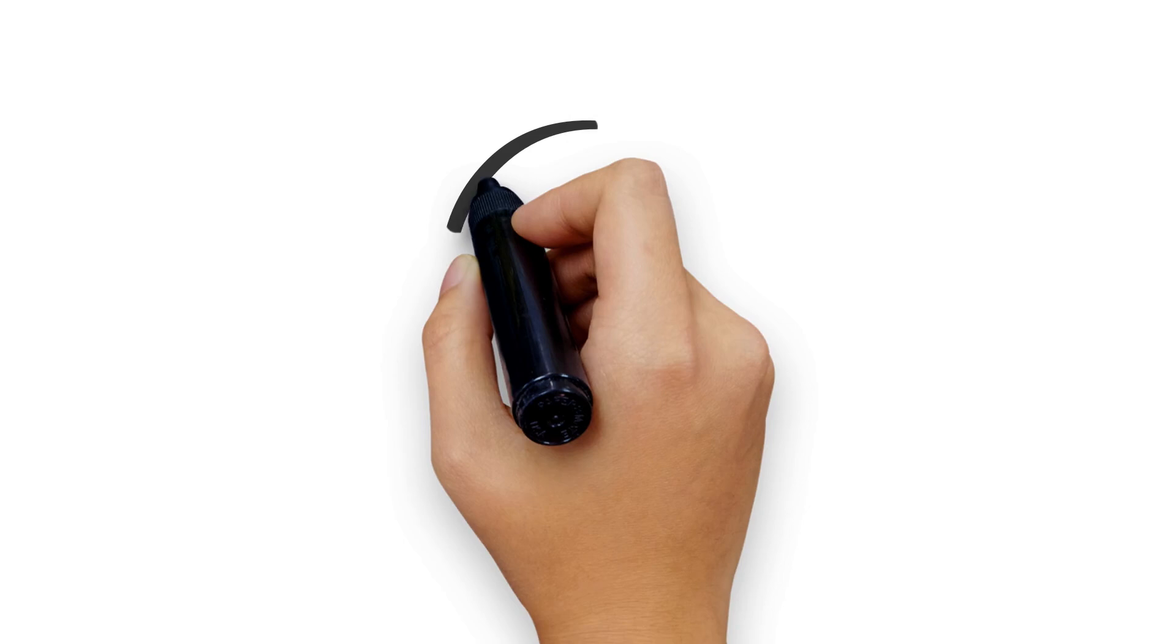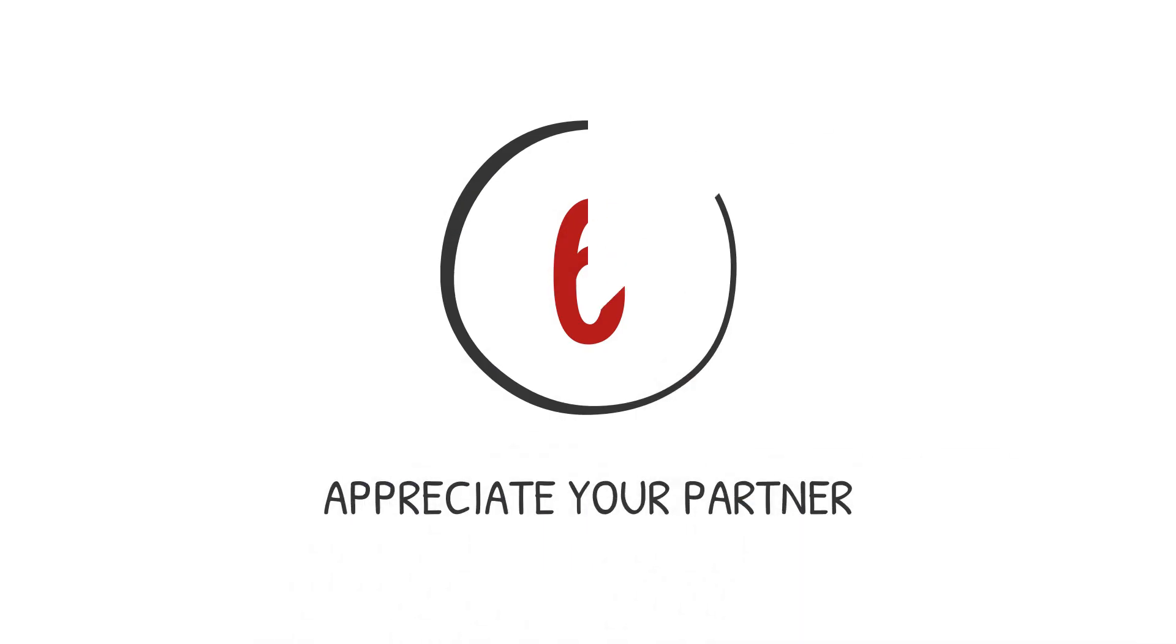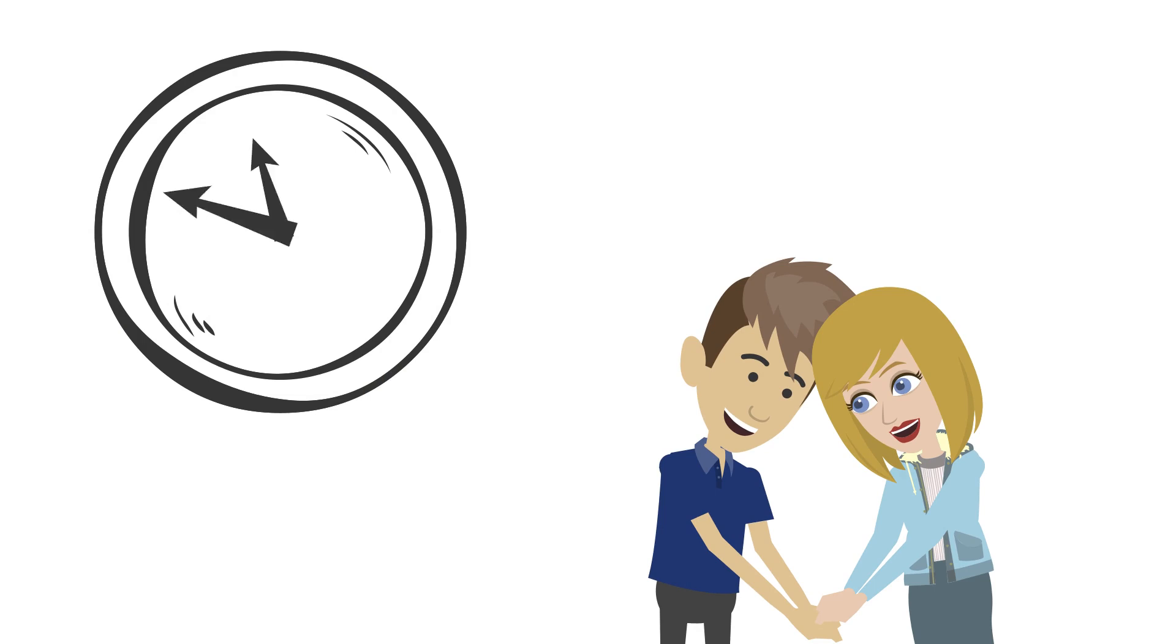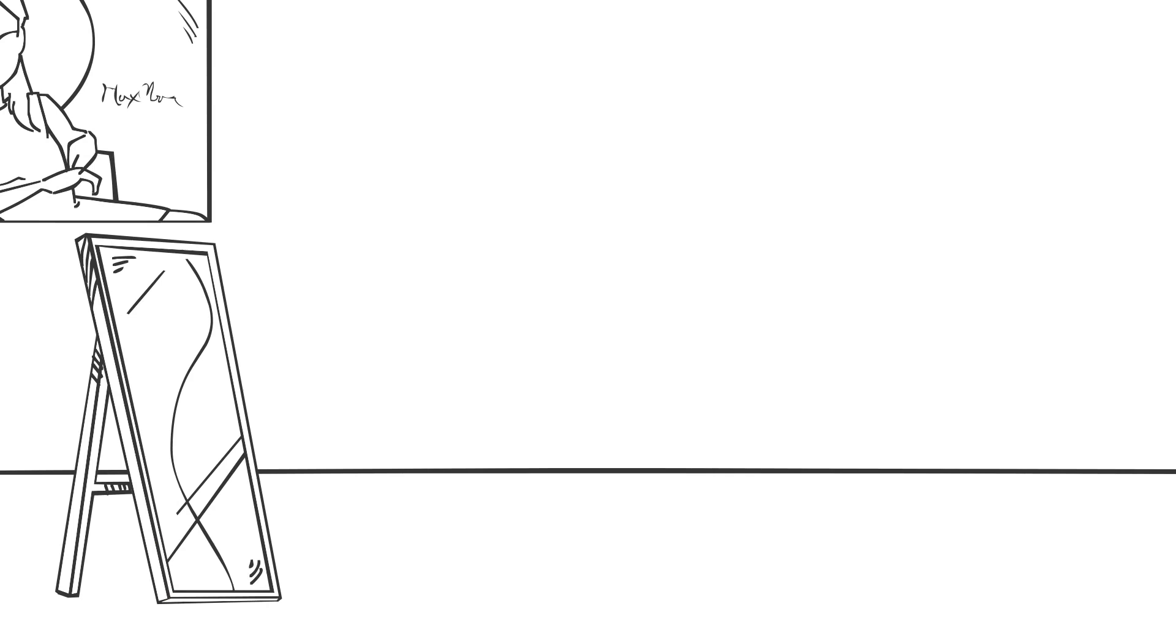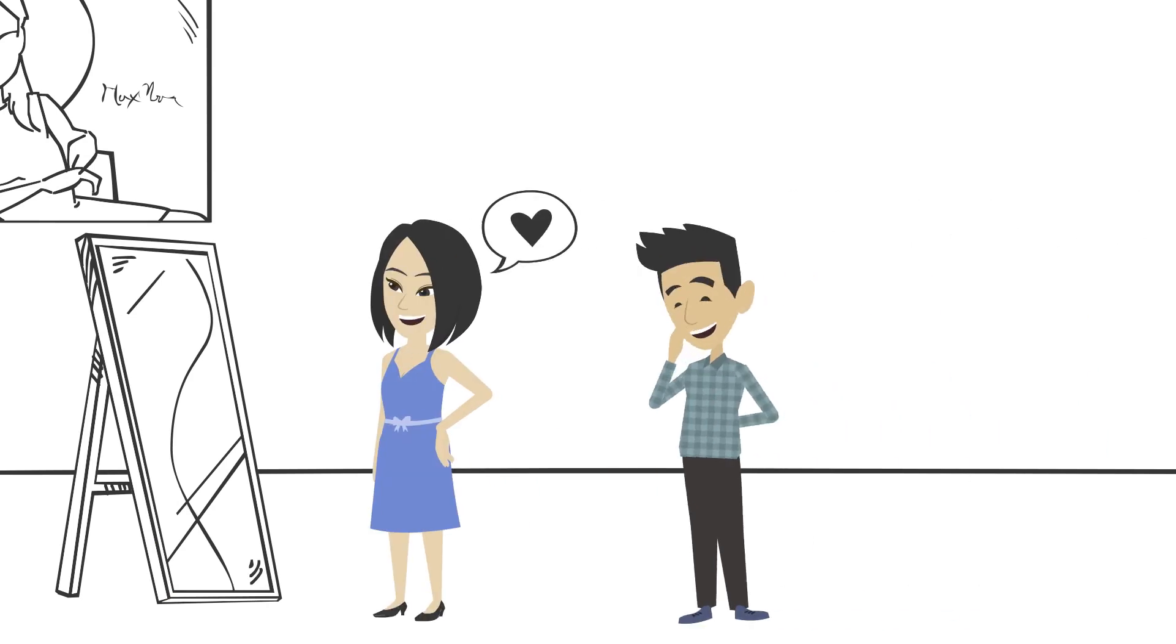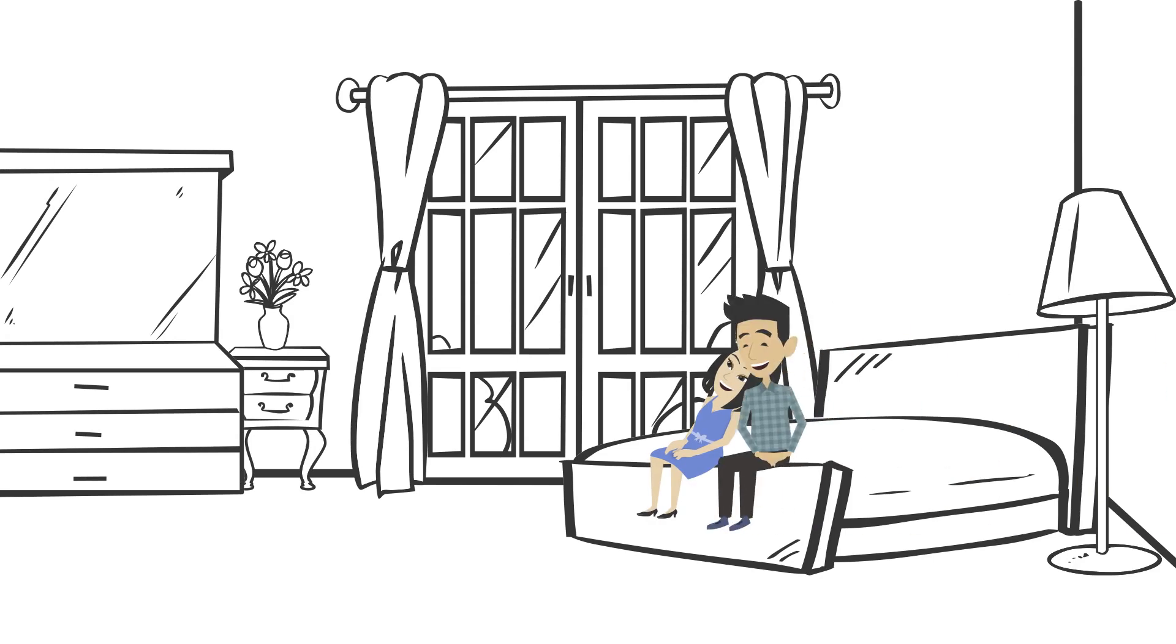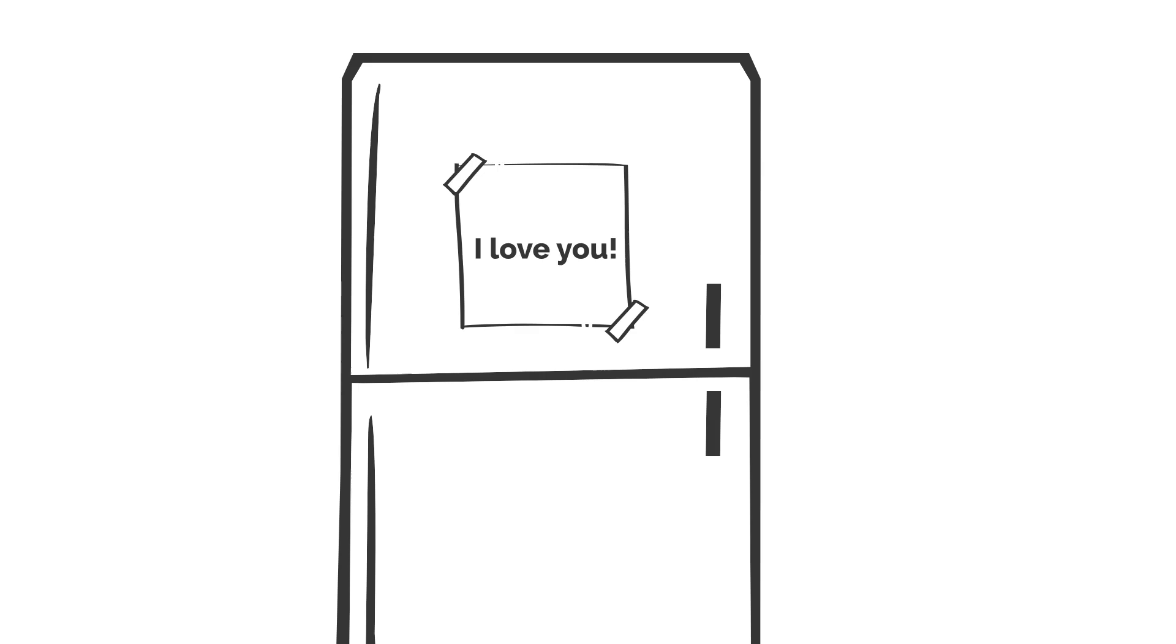Number 6. Appreciate your partner. One way to keep the spark alive in a long-term relationship is to show appreciation and affection towards your partner. It's easy to take each other for granted when you've been together for a while, but it's important to let your partner know that you still love and appreciate them. Simple acts of affection like holding hands and hugging can make a big difference in how connected you feel with your partner.